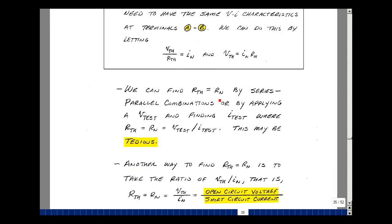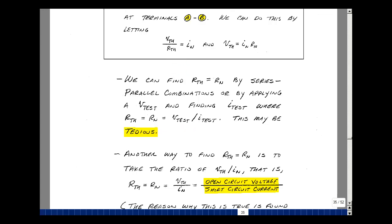Now we can find R Thevenin, which is equal to R Norton, by doing series and parallel combinations. Or we can apply a test voltage, measure a test current, and their ratio would be the value of R Norton or R Thevenin. Now this may be tedious, and so here's another idea, just using these equations that are right here. Let's solve for R Thevenin. R Thevenin from here is equal to V Thevenin over I Norton.